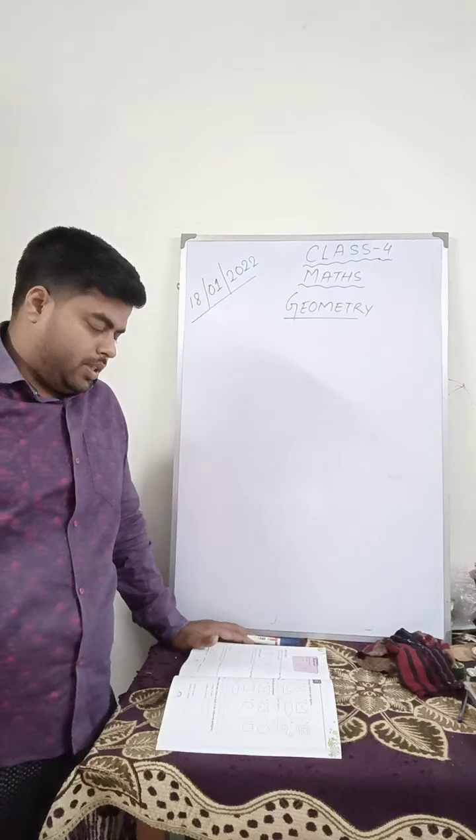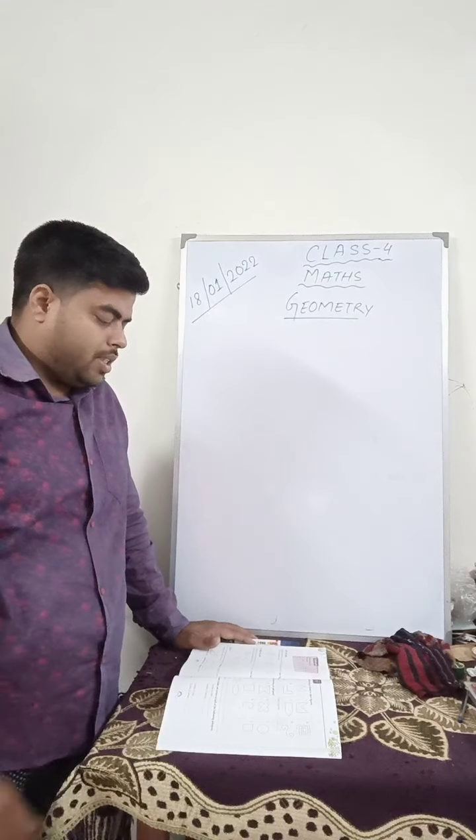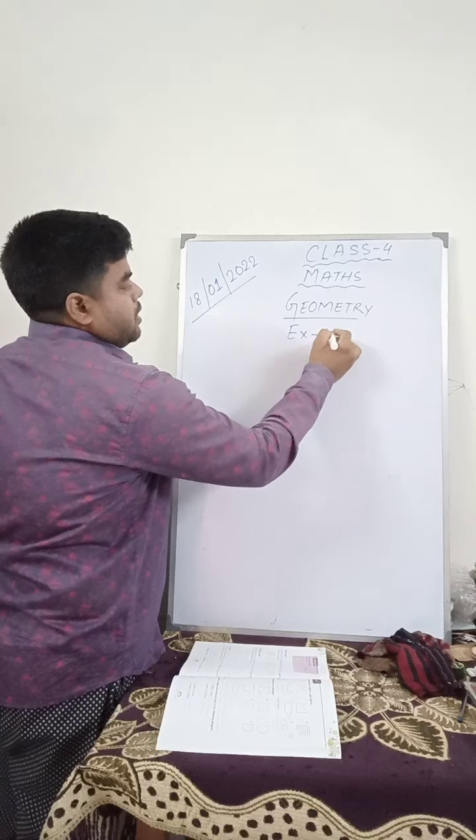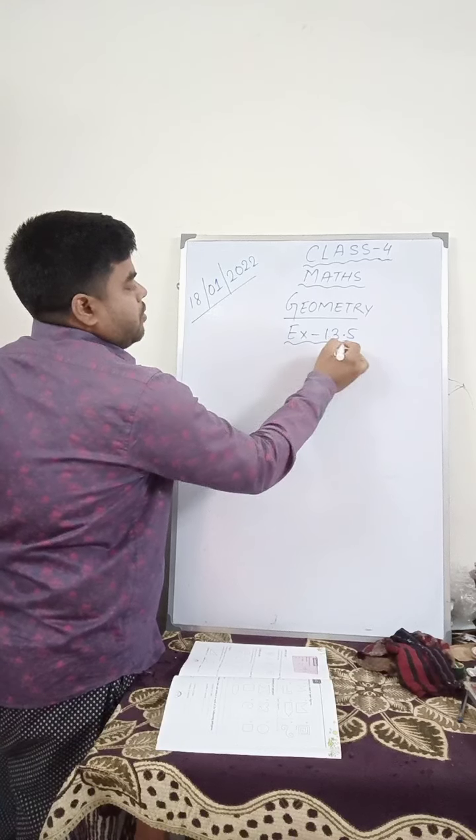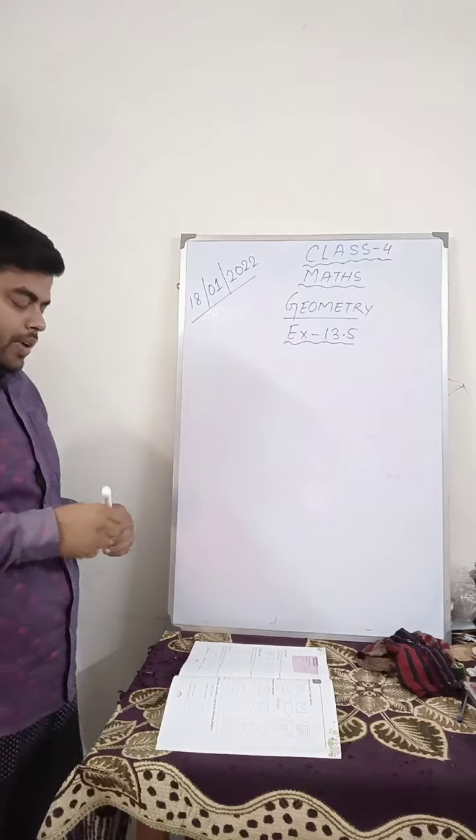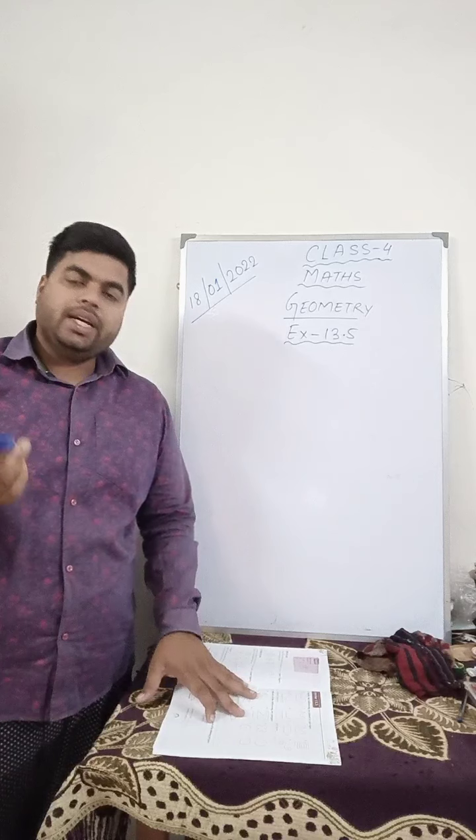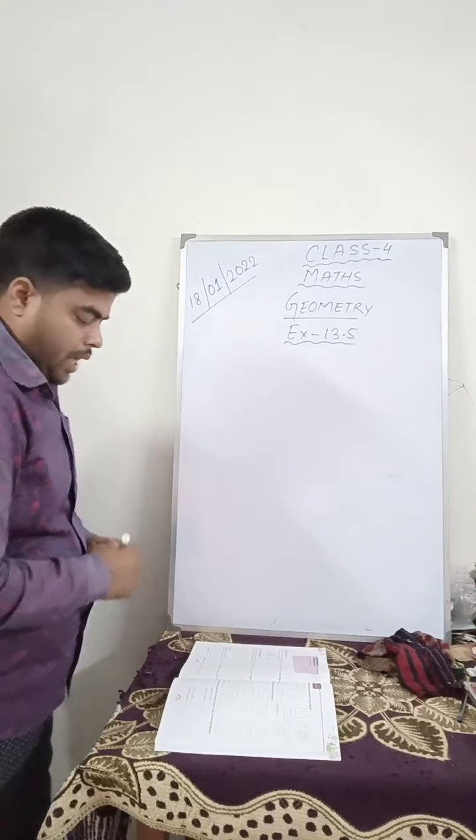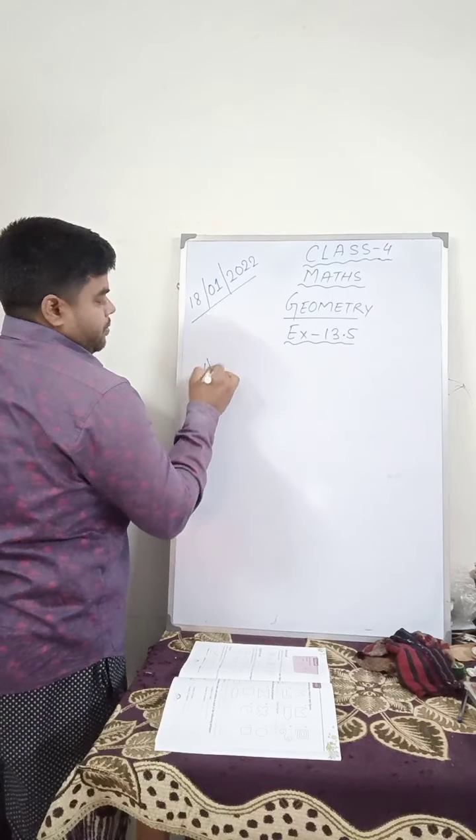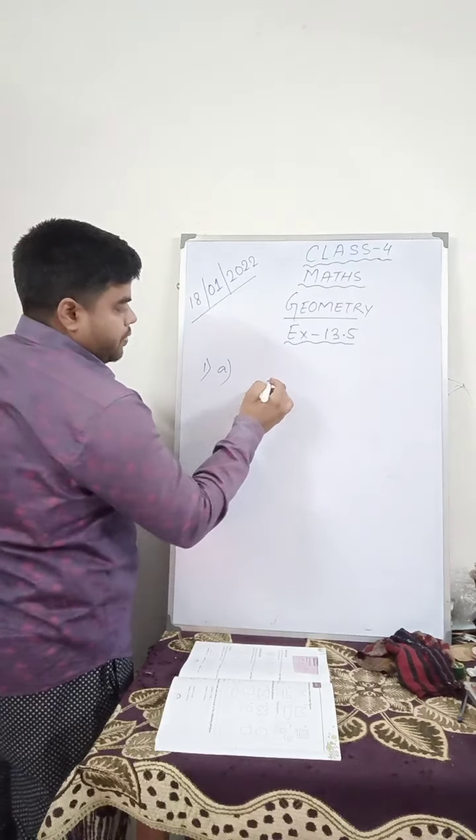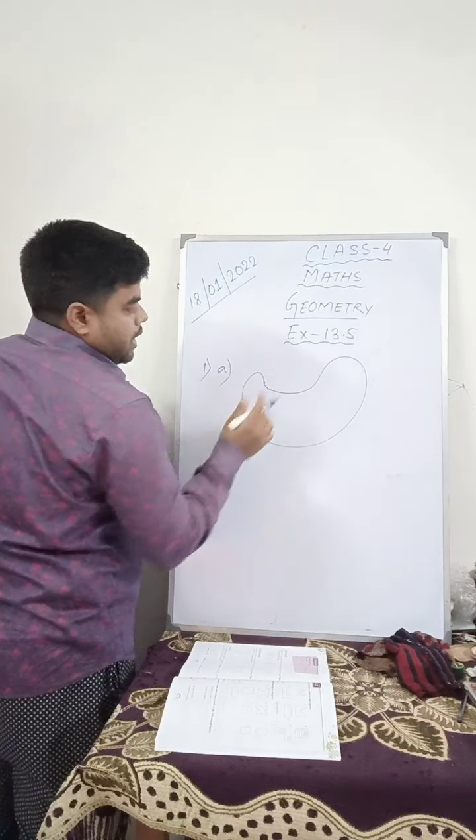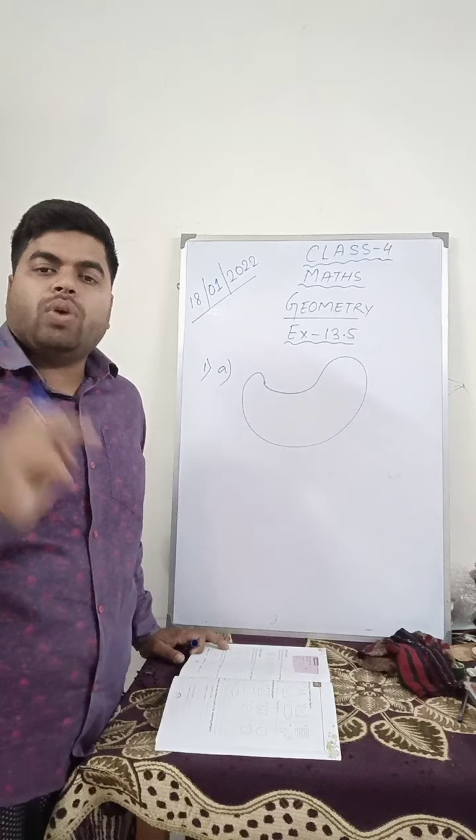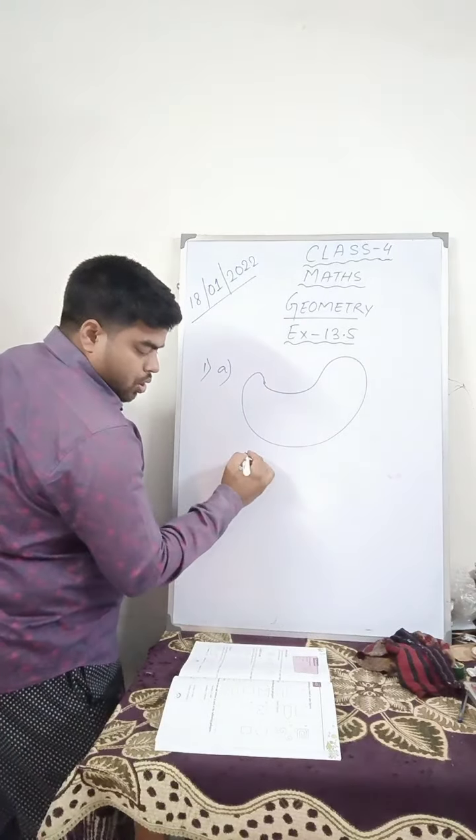Now let us start with exercise 13.5, where they have asked you to write whether the given figures are closed figure or open figure. Now let me tell you question number 1. If I draw this figure, you can easily see the starting and the ending point is that one common point. So it will be closed figure.